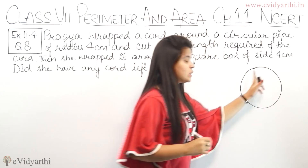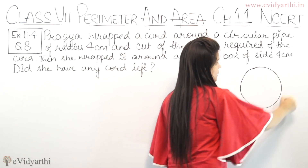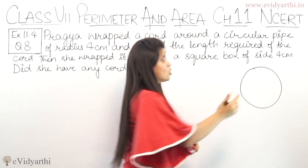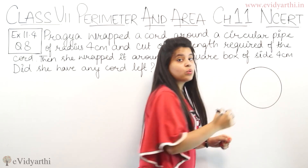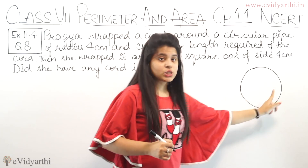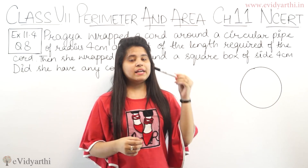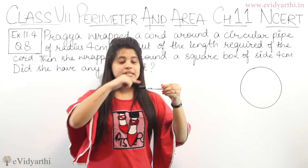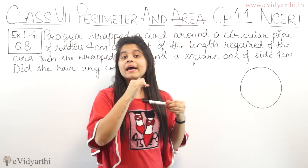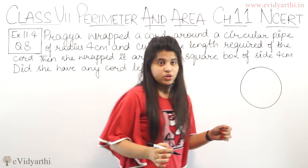Here is a circular pipe. If you wrap the cord around it and cut the extra wire, then the length of cord used is the circumference. Because if you wrap it around like this, it will be on the edge — this means the circumference of the circle.